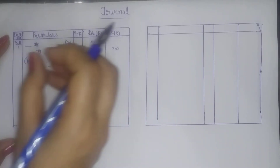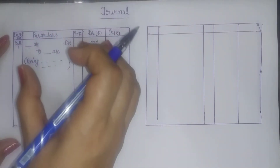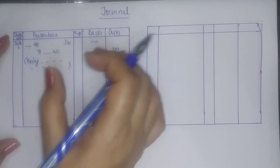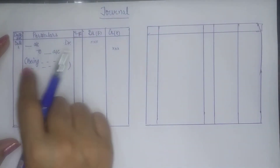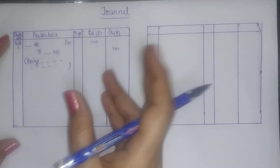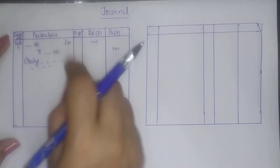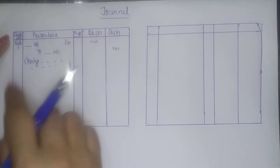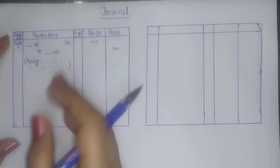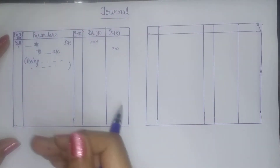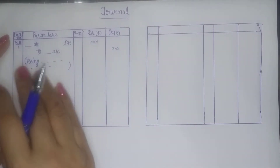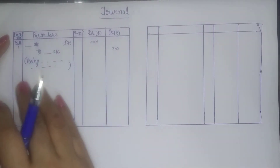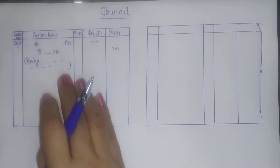Whatever event happened, whatever activity occurred, whatever transaction took place — such as cash received, so 'Being cash received.' Rent paid, so 'Being rent paid.' Salary paid, so 'Being payment of salary.' Goods purchased, so 'Being purchase of goods.' So using 'Being,' you write the explanation of that transaction.